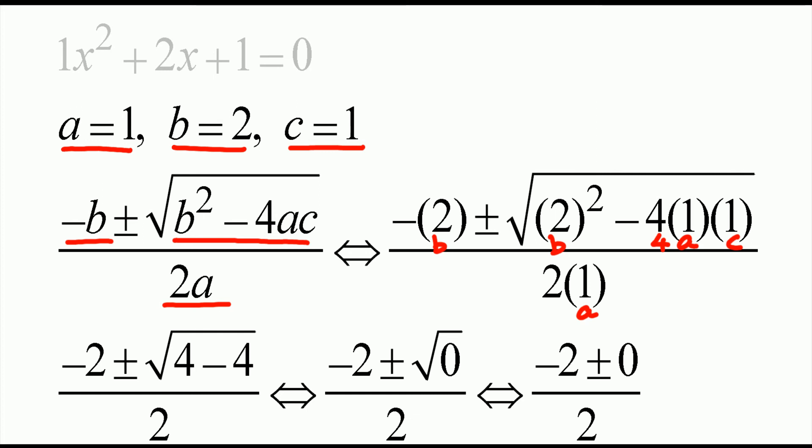So you see, it is negative 2 plus or minus square root of 4 minus 4 divided by 2, which is the same as negative 2 plus or minus square root of 0. Square root of 0 is 0 divided by 2. So you have negative 2 plus or minus 0 divided by 2, and that is equal to negative 2 divided by 2, and that is negative 1.